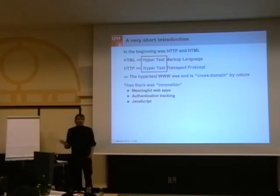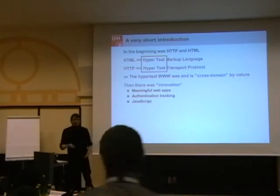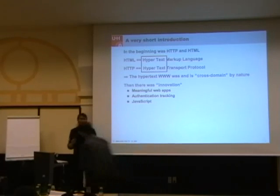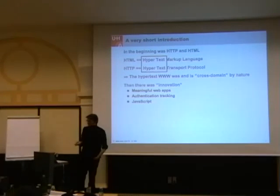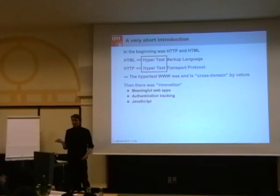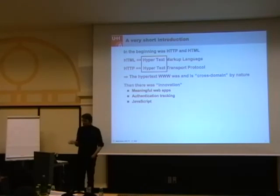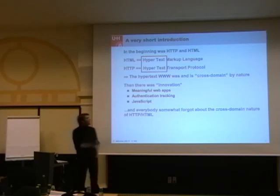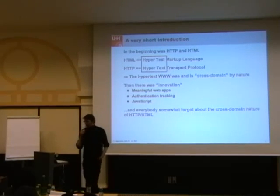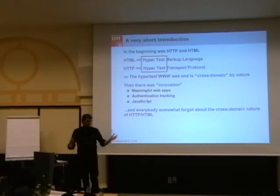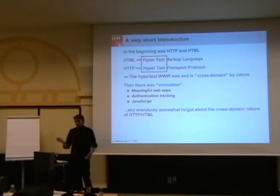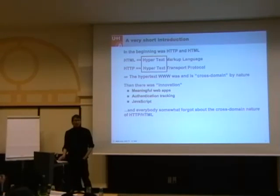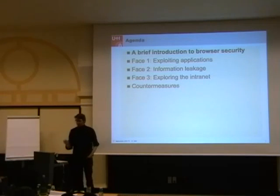Then we had innovations — a lot of innovations. We started to have full web applications that allowed you to do banking or email. And so you need authentication. Because HTTP has no session management, developers invented their own session management; we have authentication tracking and client-side technologies like JavaScript. While this innovation happened, people somewhat forgot that the WWW was about cross-domain interaction, and this is one of the reasons that causes the problems I will talk about today.